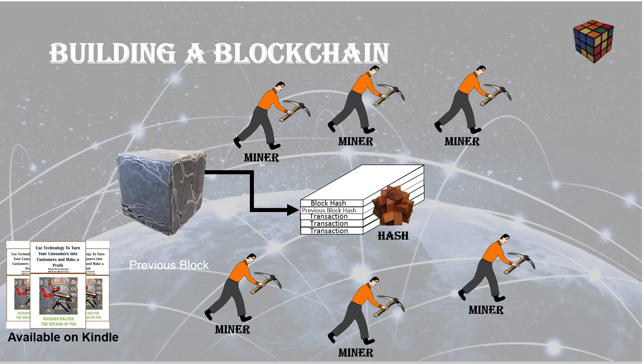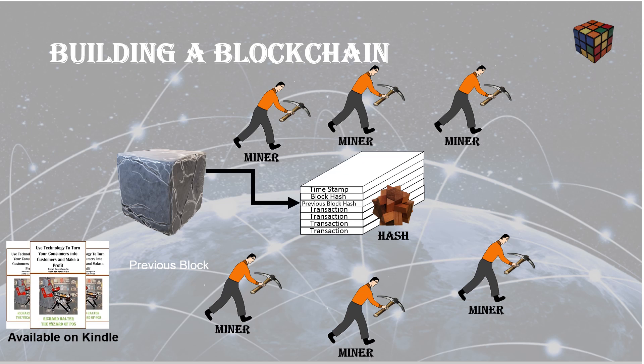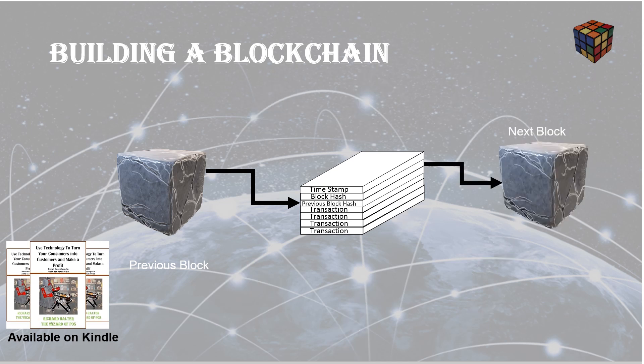This process is simply repeated. As new transactions occur, new hashes are created and validated by the miners. The whole block gets calculated and a timestamp gets put on top of it, and then we move on to the next block. This block now becomes immutable and you can't go back and change it.